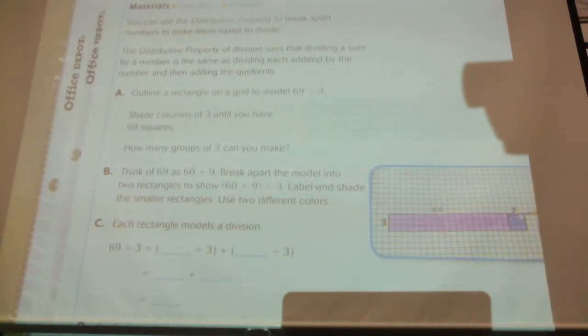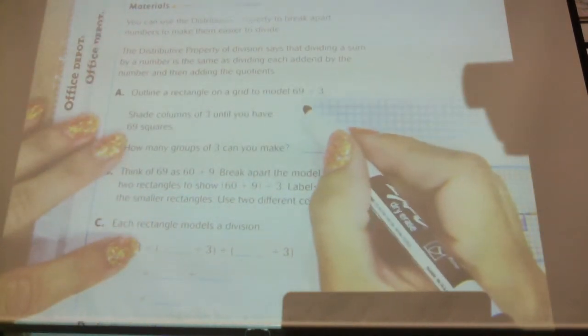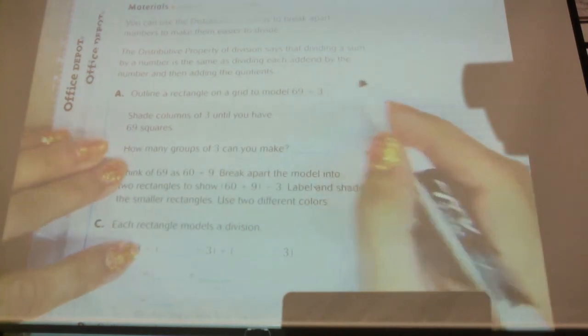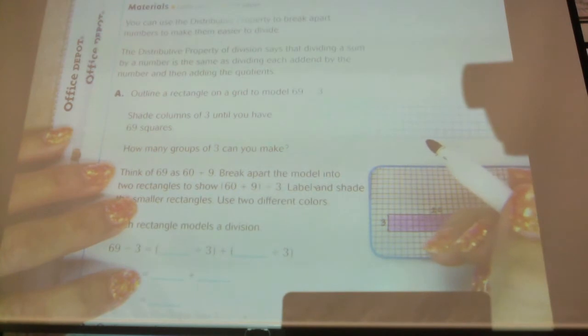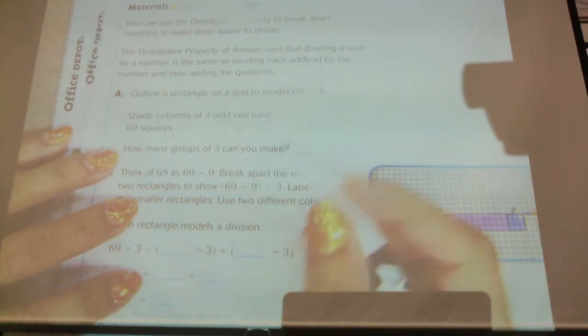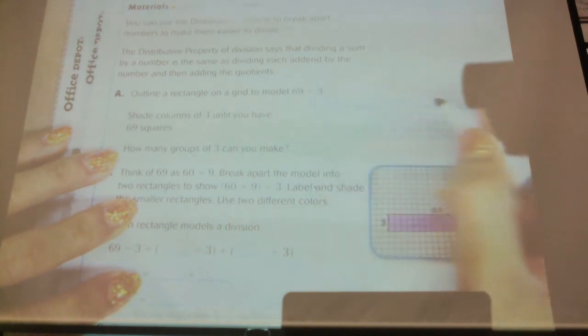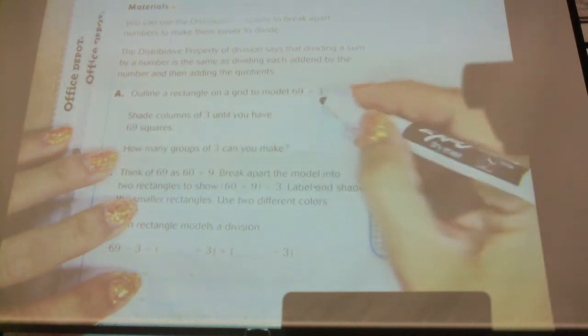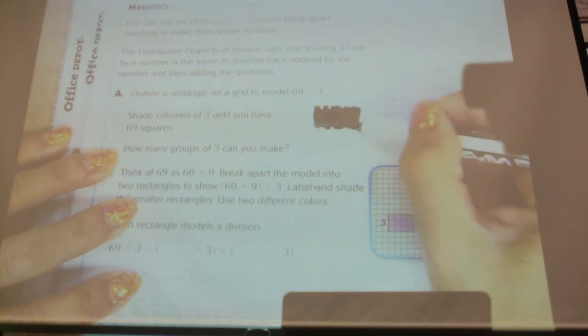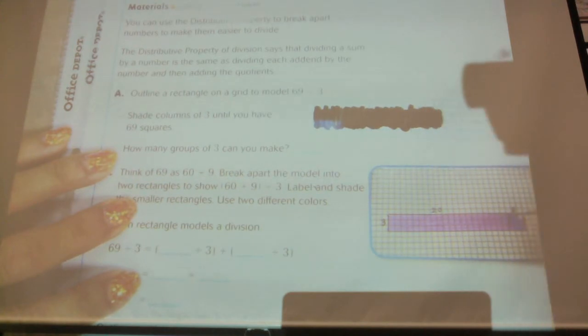So today we're going to use the distributive property for division. We have a rectangle to model 69 divided by 3. So we're going to shade three columns until we have 69 squares. Columns are, well, it looks like we have to go this way. So we're just going to shade across. I'm doing three by 30. I'm just counting. Can you tell how fast I'm counting?